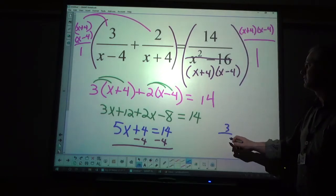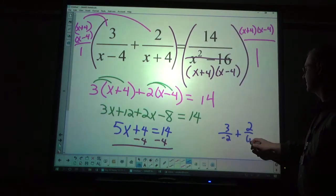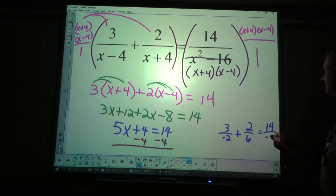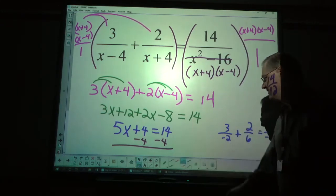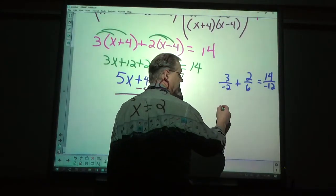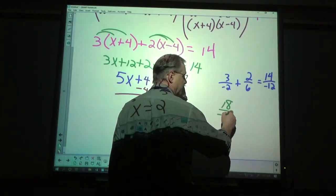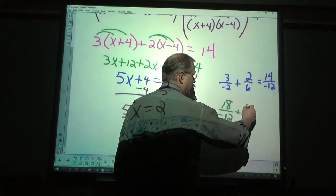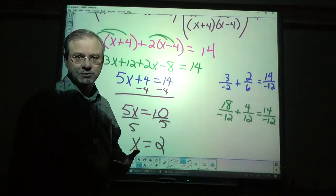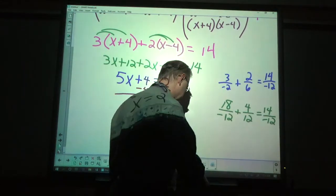I could actually take the time to do that out. Let's do that. 3 over 2 minus 4, negative 2. 2 over 2 plus 4, 6. 14 over 2 squared is 4. 4 minus 16 is negative 12. And, let's see if they actually equal each other. I would have to get these all with negative 12 in the denominator. Multiply top and bottom by 6. 18 over negative 12. Multiply top and bottom by 2. 4 over 12, 14, negative 12. It doesn't matter whether the negative is on top or bottom as long as there's only one negative sign. Negative 18 and positive 4 makes negative 14. It does work.